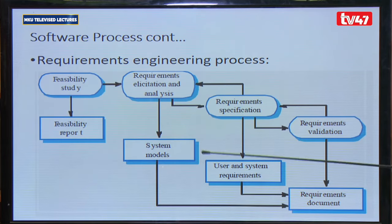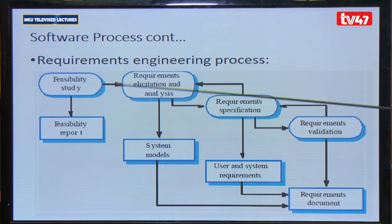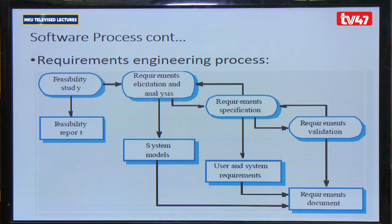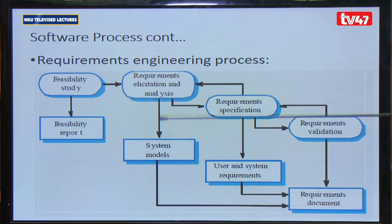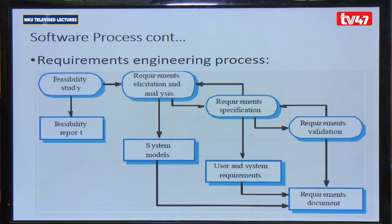The requirements engineering process starts with a feasibility study to analyze whether the software is viable — including economic, schedule, and legal feasibility. Then you gather and analyze requirements, develop system models, specify the requirements, and validate them. Finally, you produce a requirements document.